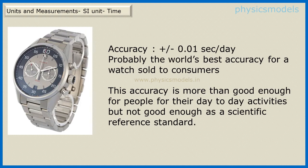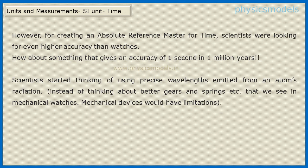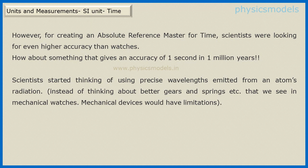Still this was not good enough for scientists because they want an absolute reference standard. The target scientists had in mind was a super clock which would not only measure one second accurately but would be off by only one second in one million years. So scientists started thinking of precise wavelengths based on atomic radiation instead of trying to make better and better gears.